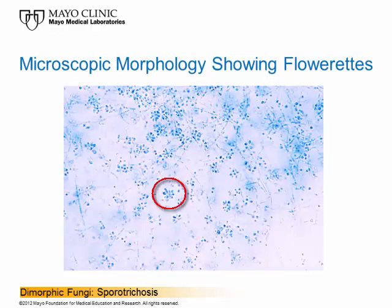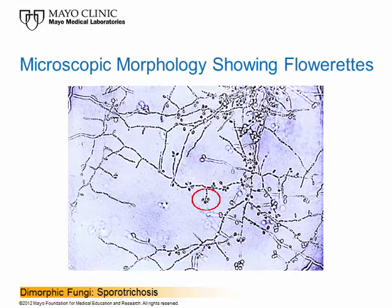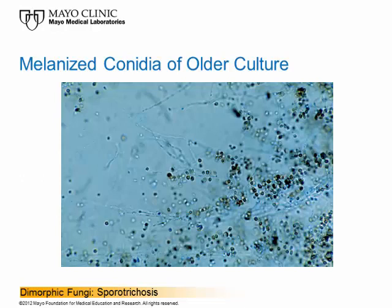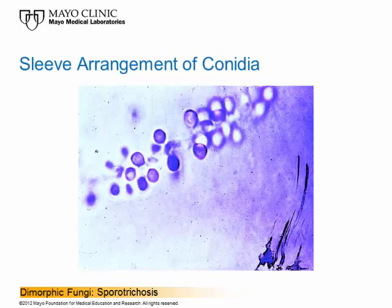You can see the florette arrangement of conidia throughout this view. One toward the bottom center shows the florette arrangement clearly. This photomicrograph shows the conidia at the tip of a long conidiophore, with three or four of them there. The sleeve arrangement shows these melanized, darkly pigmented spores produced after the florette arrangement. You can see just how dark these are — this is all melanin. These are the melanized conidia of an older culture, and there is a thread-like attachment connecting them to the hyphal strand.